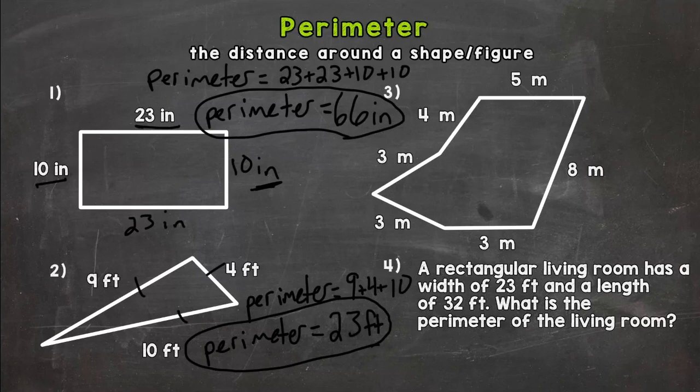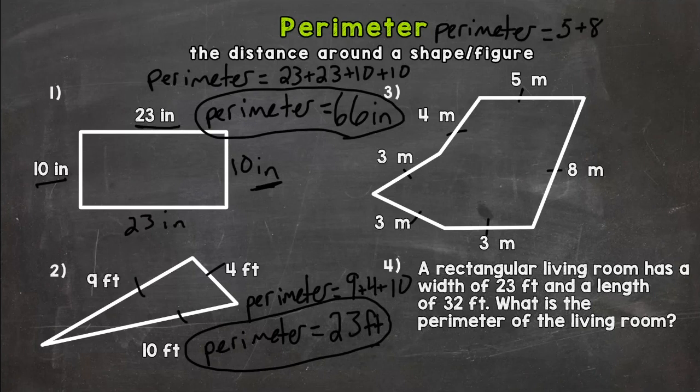Let's look at number three here. Now this one you need to make sure to include all the sides. Make sure you don't forget any of the sides and don't repeat anything. So let's see how many sides we have. One, two, three, four, five, six sides. So that means we need six numbers added up. So let's start up top. We have a 5 plus 8 plus the bottom 3 plus another 3 plus another 3 and then a 4.